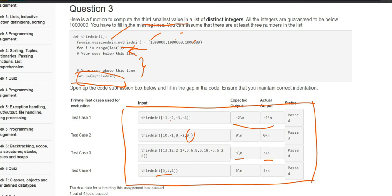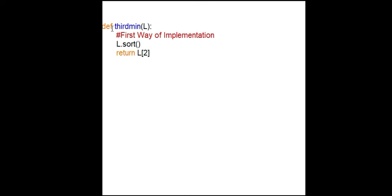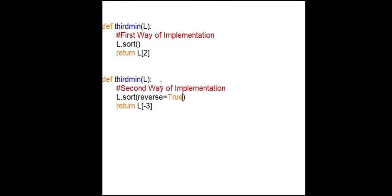Let's code this in our editor. Irrespective of the code structure given by them, if I have to find the third minimum element of any given list, I would simply first sort the given list and then return the third element from the start — that's why I've written l[2]. The second way would be to sort the list in descending order and then return l[-3], which means the third element from the last.